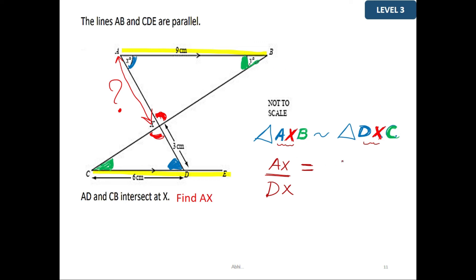Substituting the values: AX over DX, my DX is 3 cm, is equal to AB, which is 9, over DC, which is 6 cm.